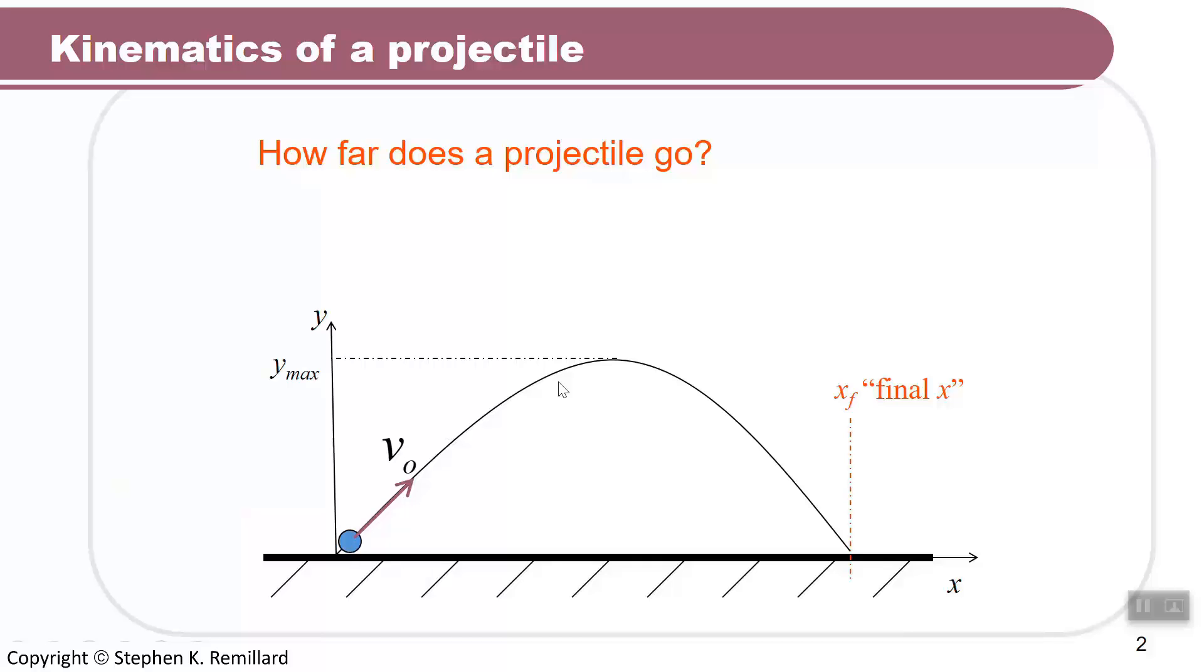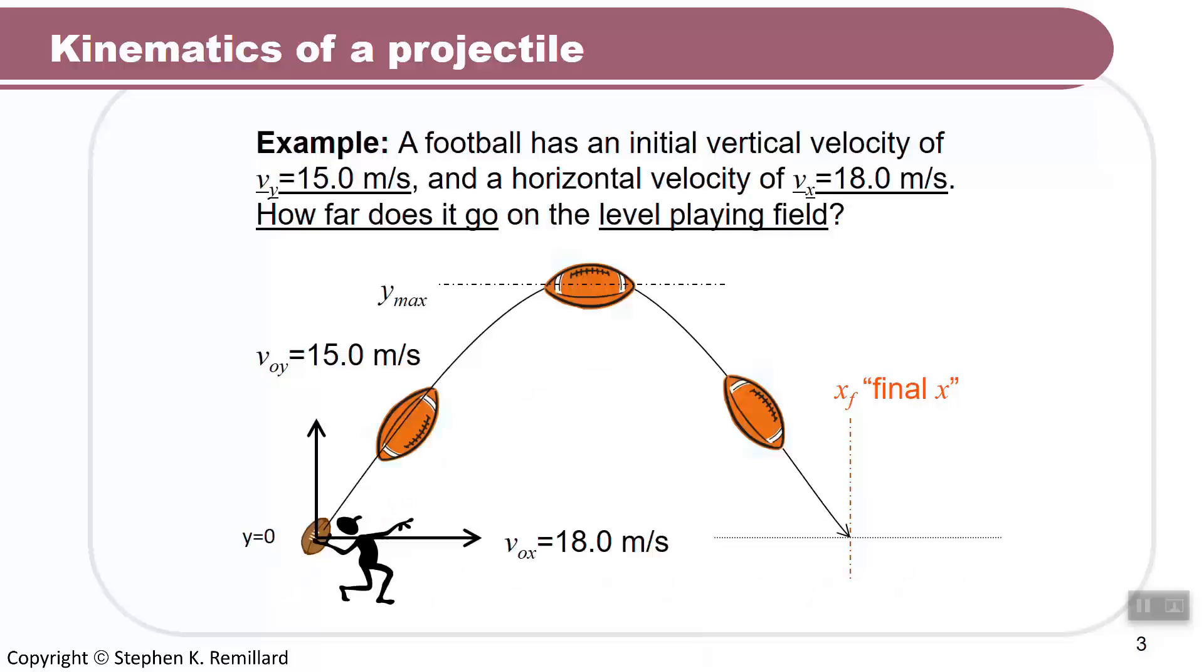I would describe the trajectory right here. It's launched with a speed, V sub zero, V initial. It goes a height to Y max, and then it comes back down and hits the ground. On a level playing field, it'll hit the ground at the same height it leaves, and we'll just consider that today. X final is how far it goes. And that's really something we would like to know. You want to hit the target.